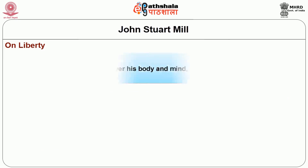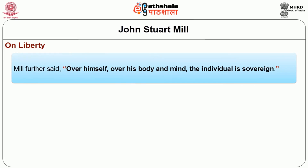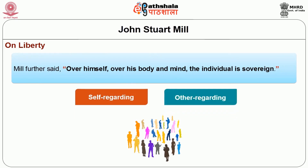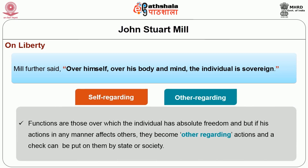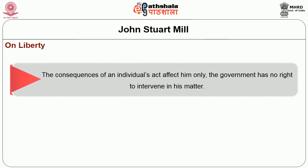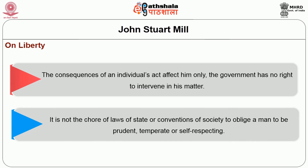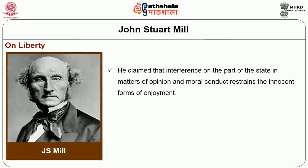Mill further stated that over himself, over his body and mind, the individual is sovereign. Thus, he draws a distinction between self-regarding and other-regarding actions of the individual. Self-regarding actions are those over which the individual has absolute freedom. But if his actions in any manner affect others, they become other-regarding actions and a check can be put on them by the state or society. So far as the consequences of an individual's act affect him only, the government has no right to intervene. Mill claimed that interference on the part of the state in matters of opinion and moral conduct restrains the innocent forms of enjoyment.